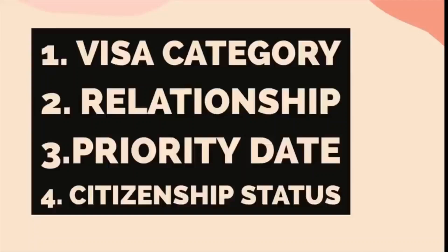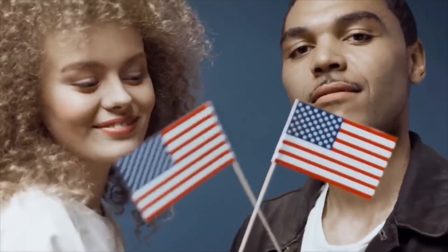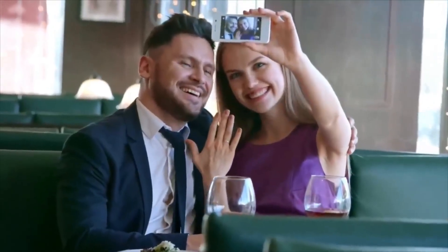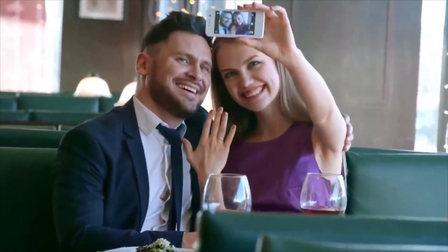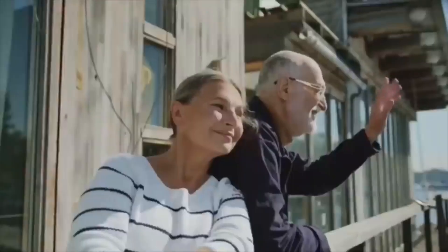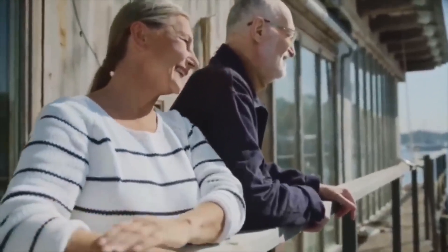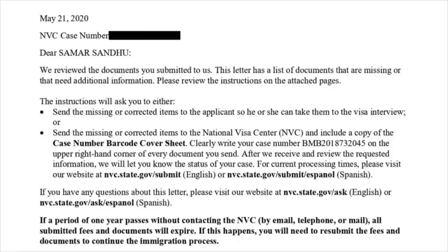Processing of the petition varies according to the visa category of the applicant, the relationship of the applicant with the petitioner, the priority date of the applicant, and the citizenship of the petitioner. In general, US citizens' petitions are processed faster than petitions filed by LPRs, also known as green card holders. It is also important to note that visa categories whose priority date is current — such as spouses of US citizens and LPRs, as well as parents of US citizens — are processed immediately once the case is transferred to NVC.